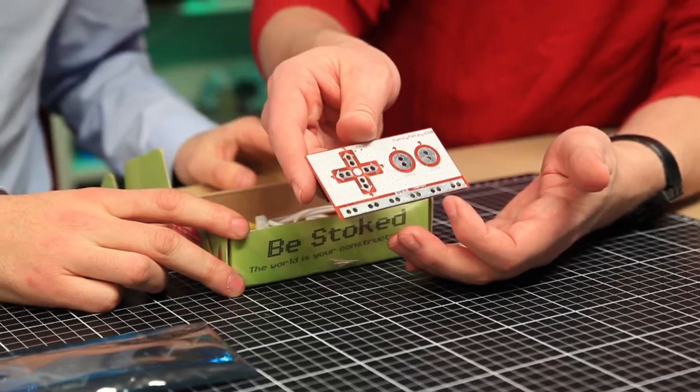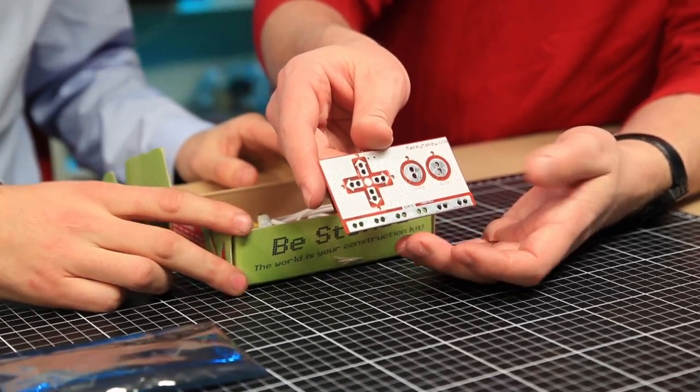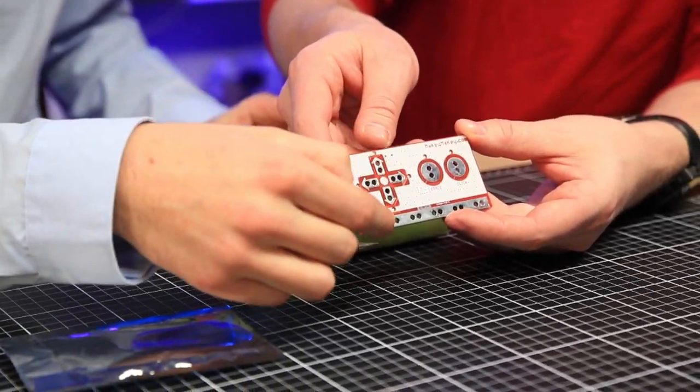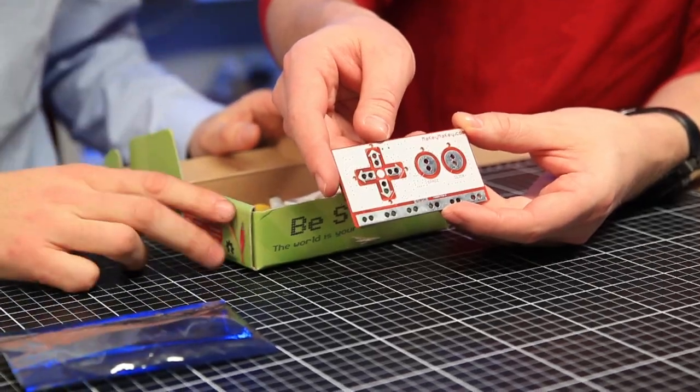And what are these holes down here, Nils? Well, that's earth. So if you want to press any of these buttons, you make a connection between the earth and the button that you want to press.